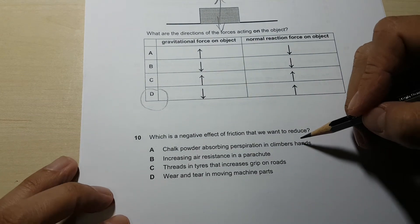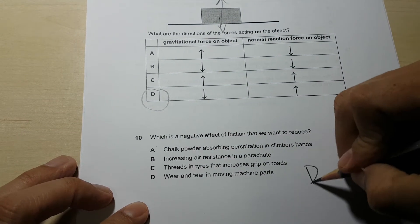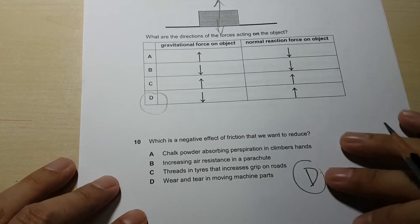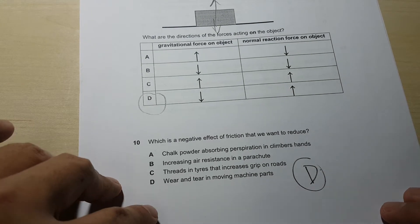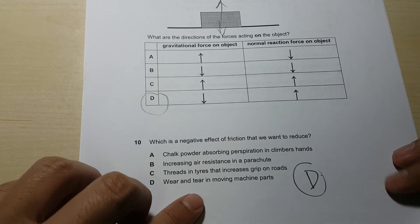Negative effect of friction that we want to reduce. This one did one of the best questions. Almost everybody got this right for D. That's wear and tear in moving parts.